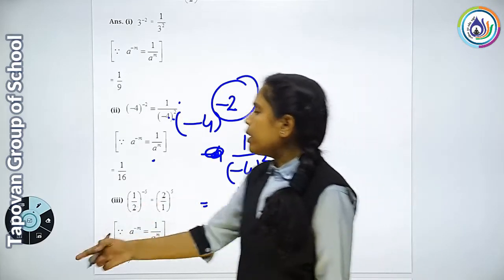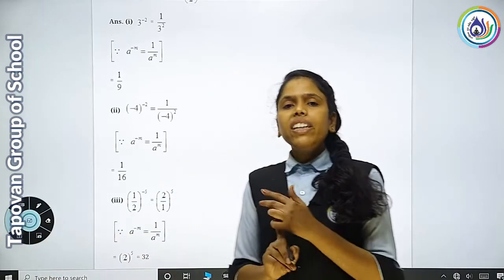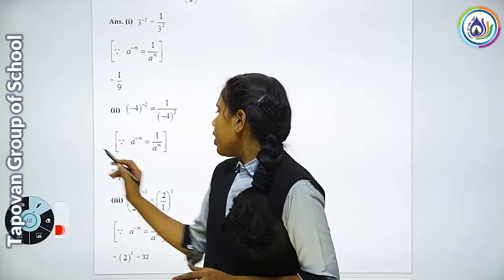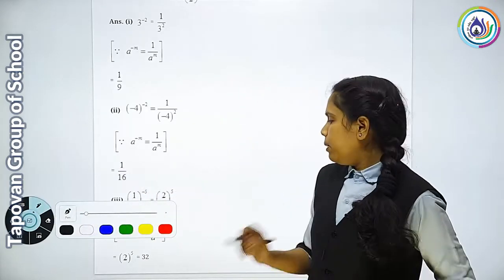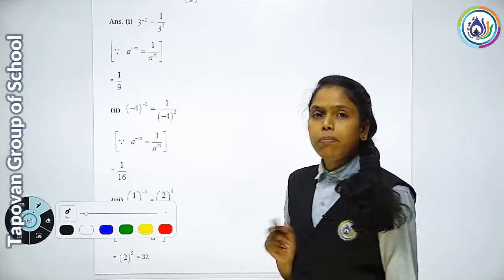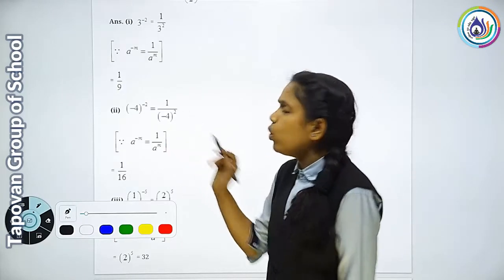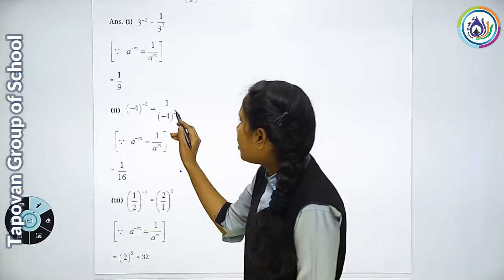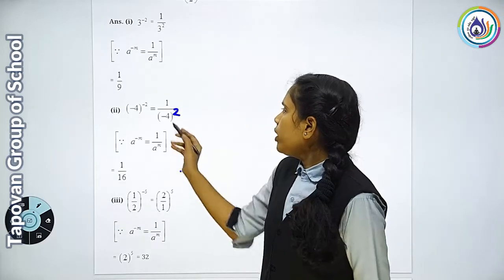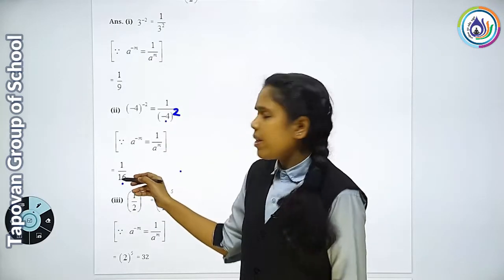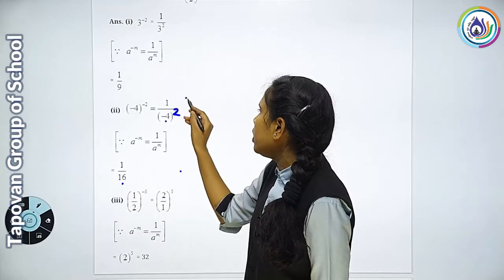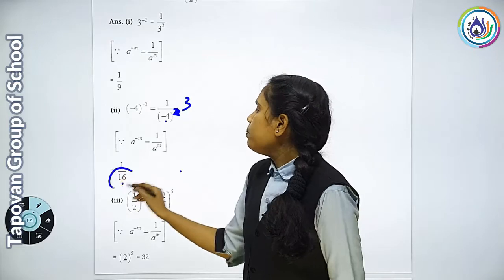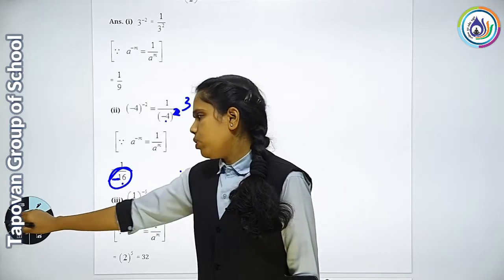Jab bhi kisi number ki power even number mein ho, to answer plus mein ho jayega. Agar kisi number ki sign minus mein hai aur uska power odd number mein hai, to minus ki sign nahi jayegi. Yahan square tha — even number tha — to yeh plus mein ho gaya. Minus tha phir bhi plus mein hoga. Lekin agar odd number mein hota — 3 hota 2 ki jagah — to yahan answer plus mein nahi hota, minus mein hota.